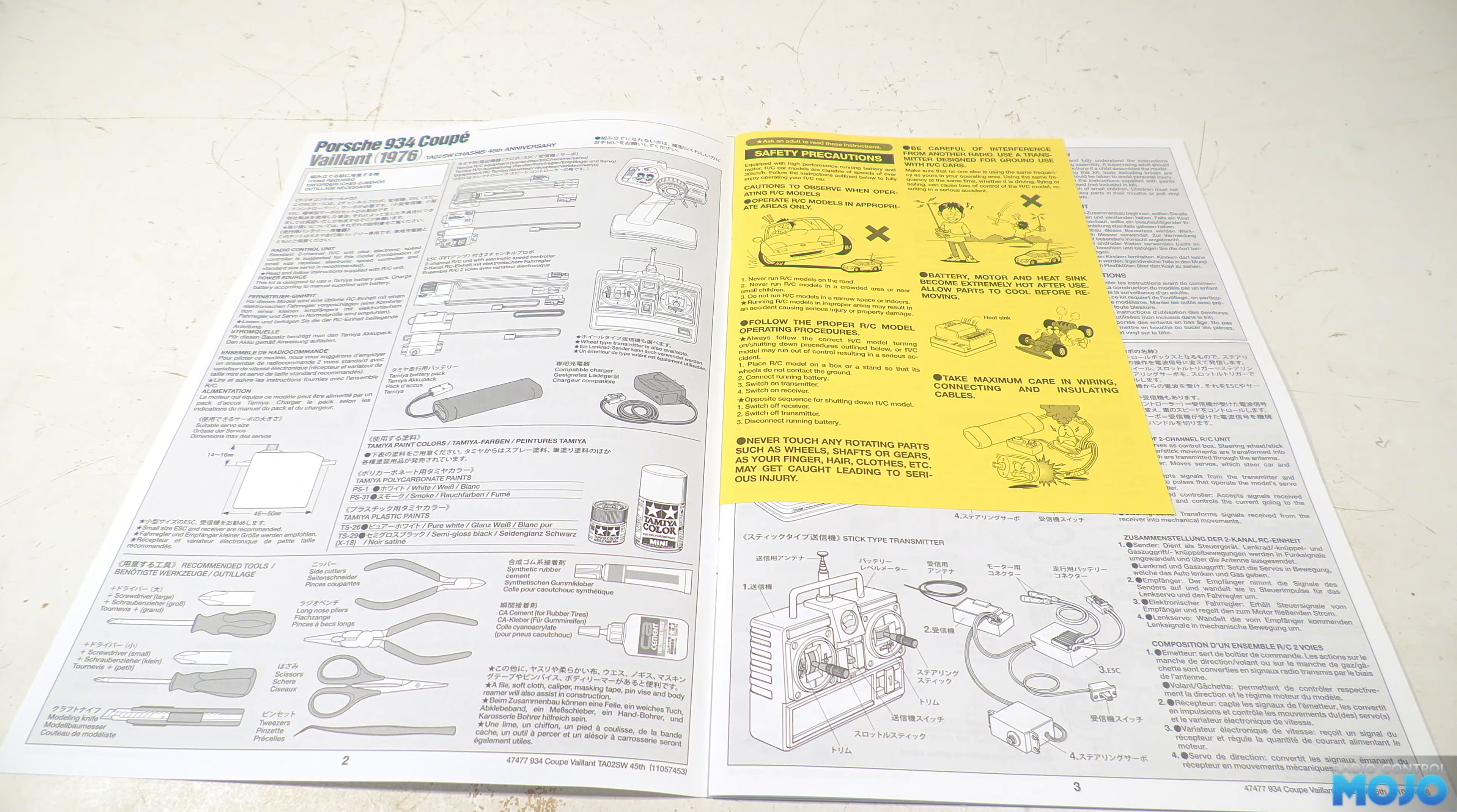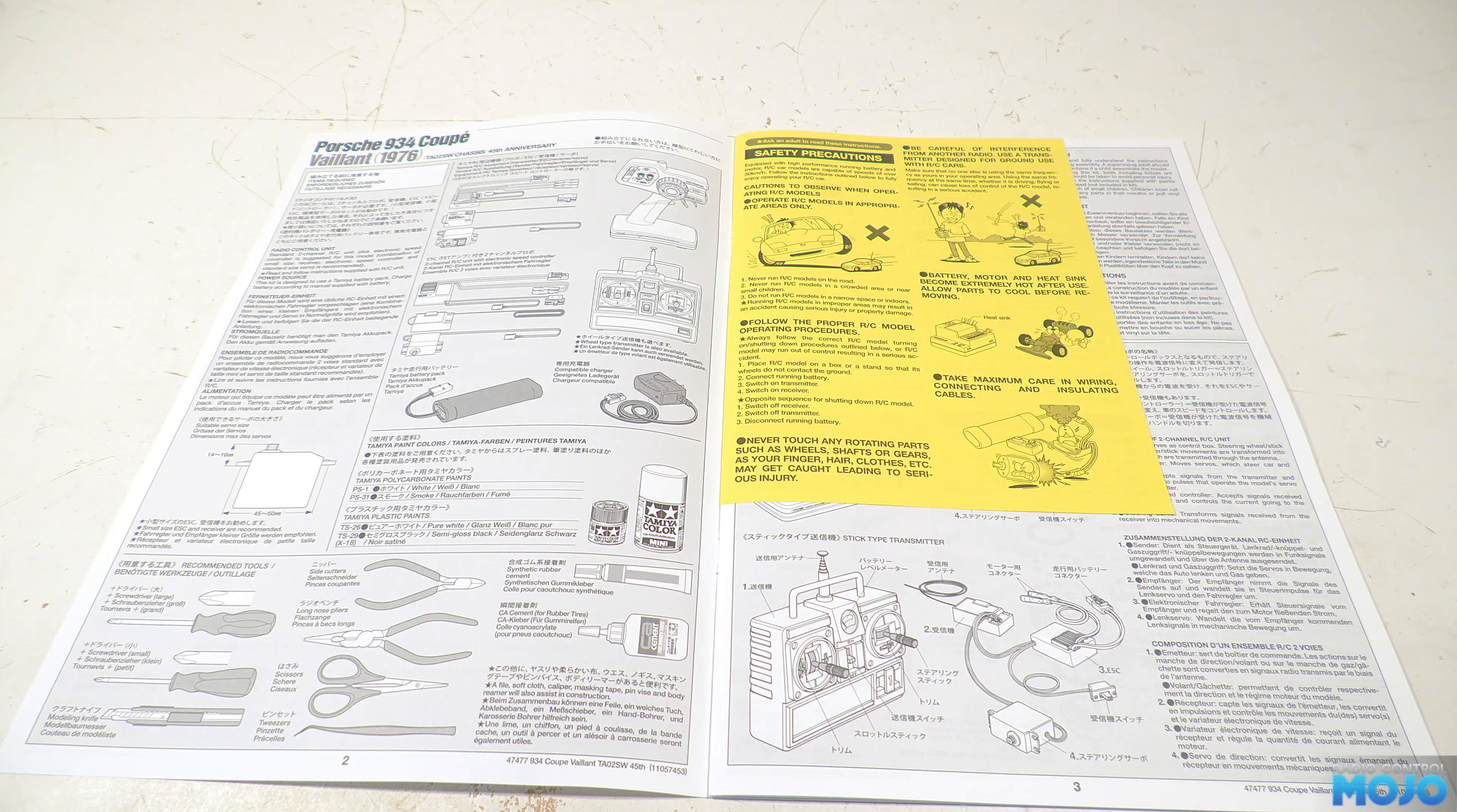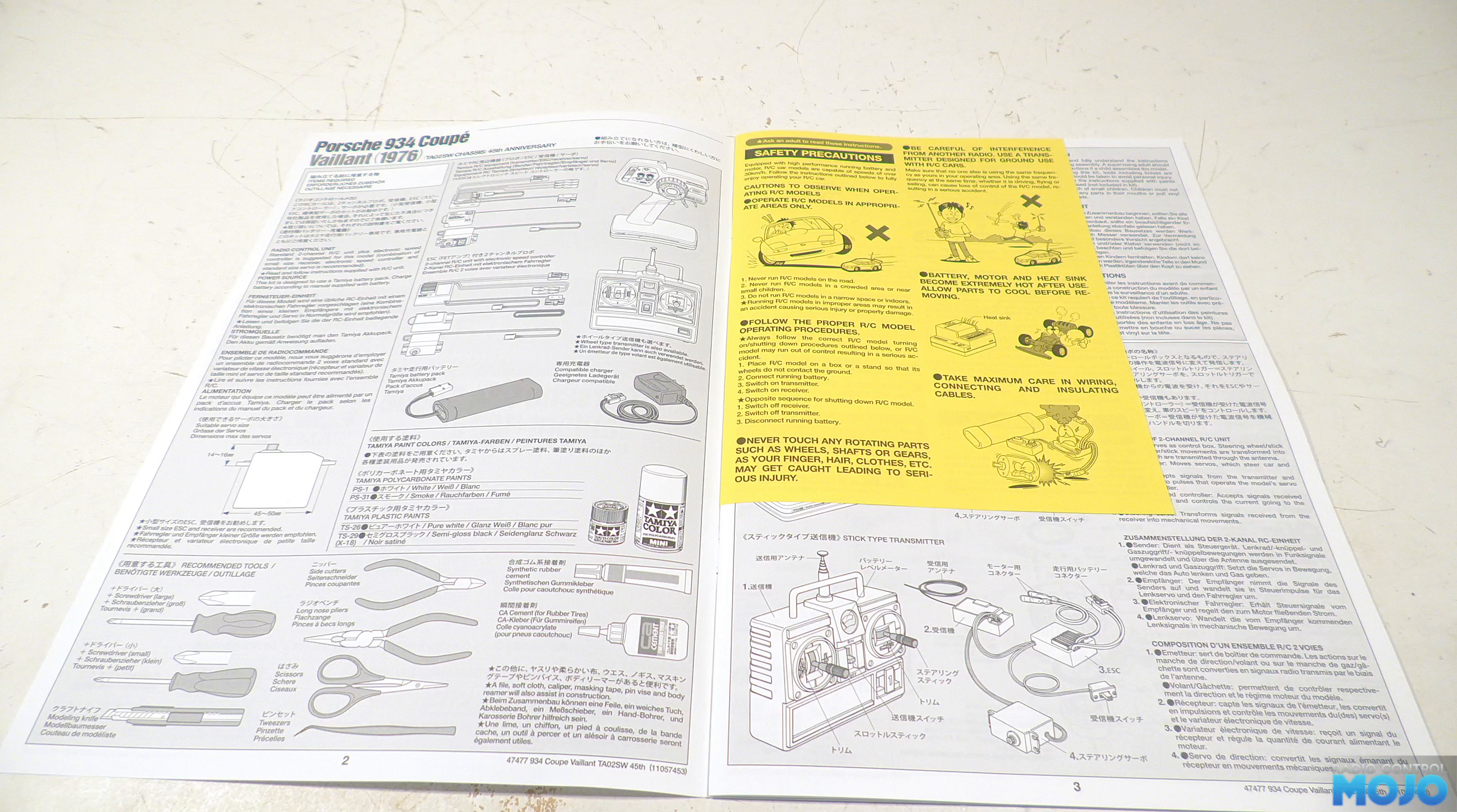On the first pages we have the standard info on what's required to finish the kit. It basically comes down to needing a radio, ESC and a battery for the electronics, some paint and glue and a fairly typical set of tools.